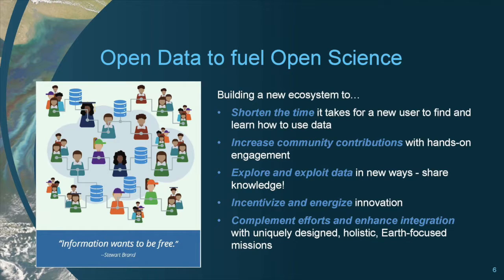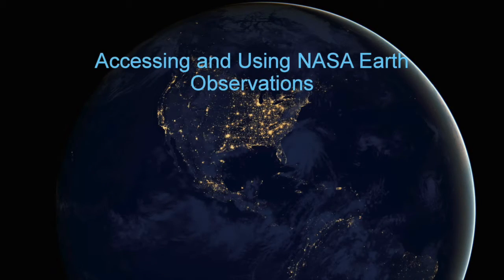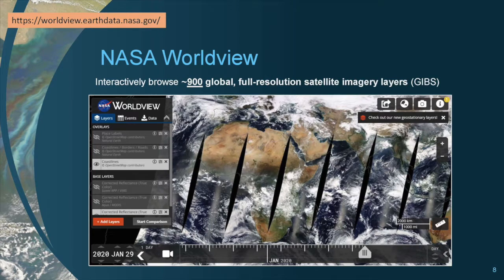NASA has a wealth of data available to enable science to better understand our planet. Here we have Worldview, a visualization application that provides the capability to interactively browse full-resolution satellite imagery layers. Many of the available imagery layers span multiple years and are updated within three hours of observation, essentially showing the entire Earth as it looks right now. You can search and add layers via thematic areas or science disciplines.